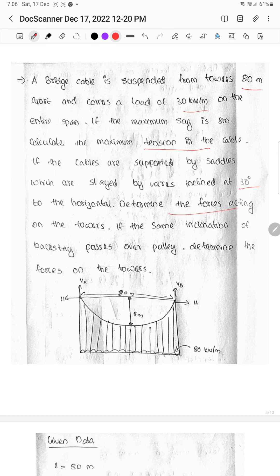If the same inclination of back stays passes over a pulley, determine the forces on the towers. When we have towers, we have suspended towers. The span between supports is 80m, and the deflection value is 8m. The acting load is UDL of 30kN per meter.